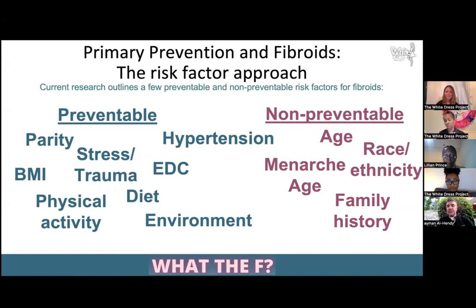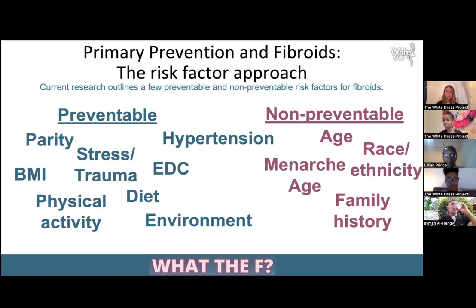A lot of people are asking about other natural remedies. I want to segue to primary prevention and the risk factor approach. Under the definition of primary prevention, we look at risk factors and really be aware of them. There are non-preventable ones — Dr. Al-Hindi spoke about African American women being more likely to be affected. Age over 35 tends to see an increase in frequency. Depending upon how old you were when you had your first period — your menarche age — and family history: Lillian talked about her mother having fibroids. Many White Dress Project members and even founder Tanika Gray have family history as well.